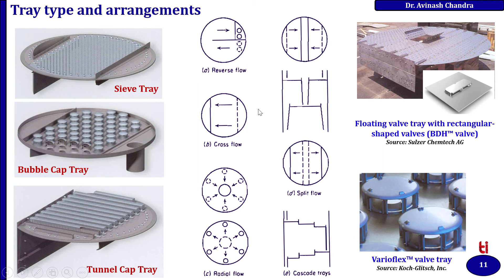Based upon flow dynamics inside the column, the flow arrangements include reverse flow, where fluid flows in opposite directions; radial flow, which may be either from the periphery to the center or from the center to the periphery; cascade flow, where the fluid flows in steps from one level to the next; and split flow, where the flow is divided and directed in two directions.